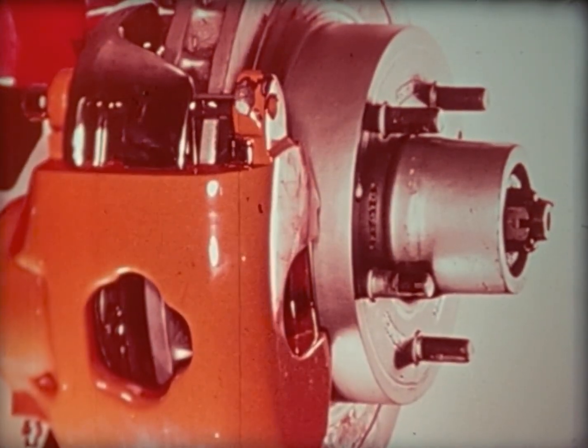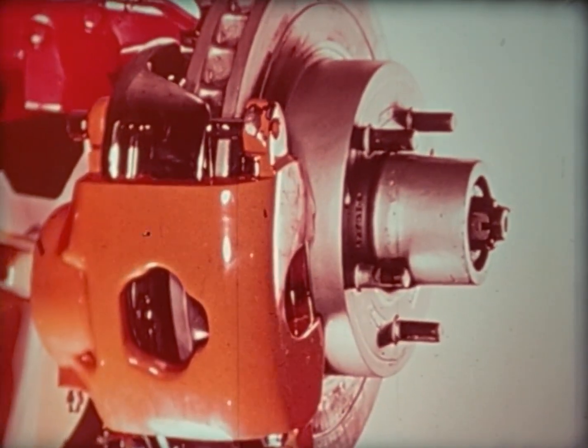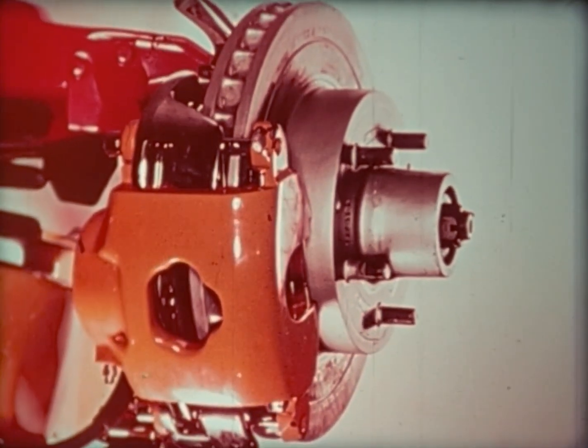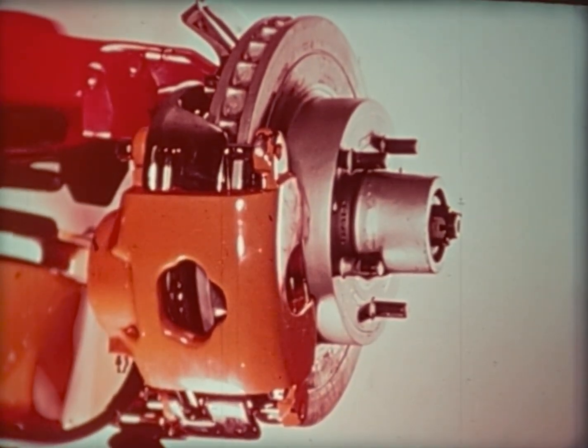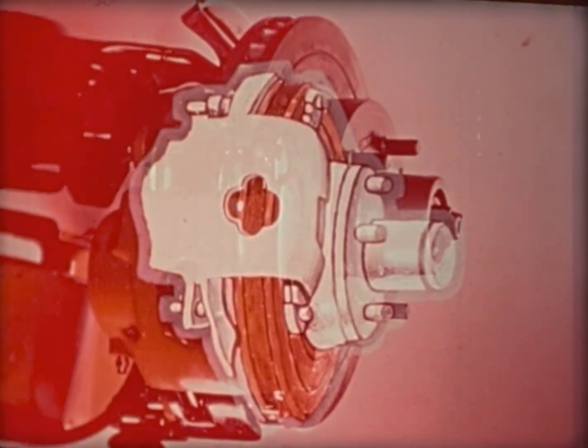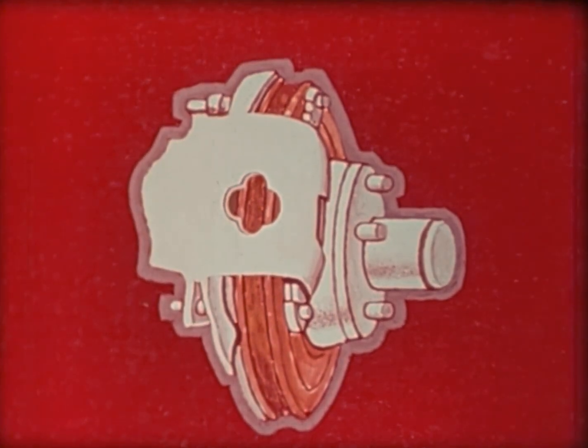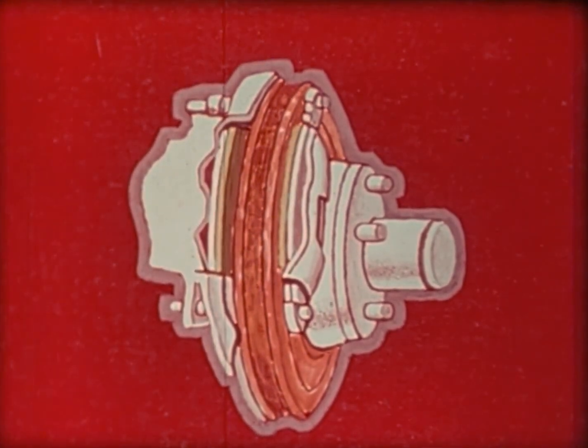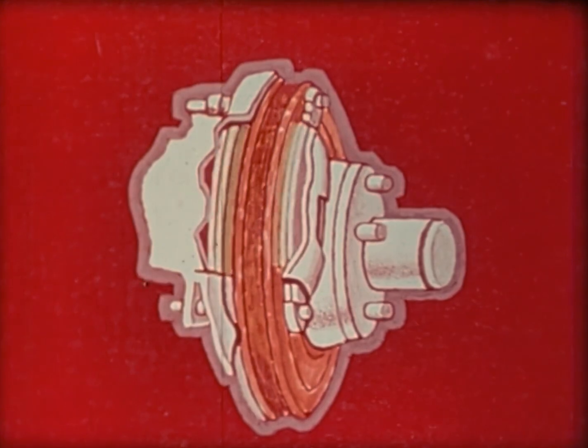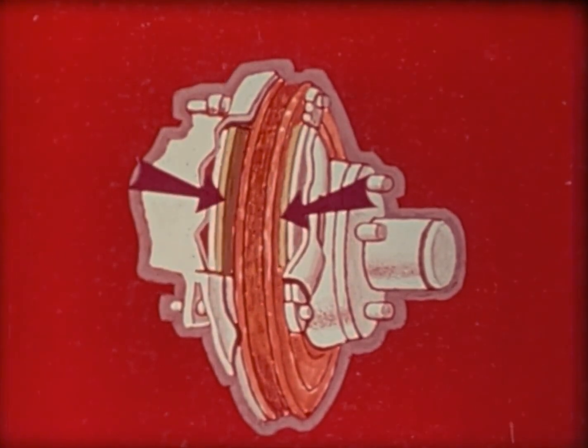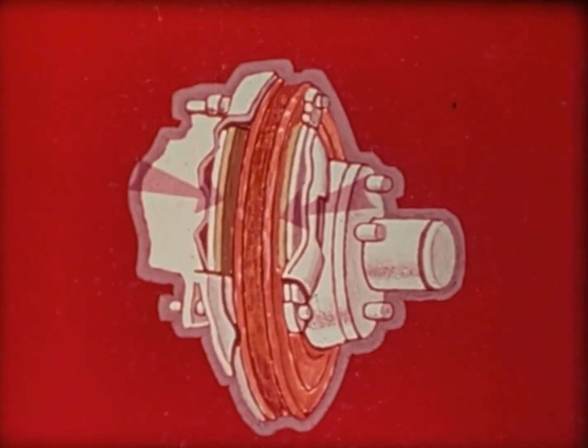Many front brakes are now of the disc type. Like the drums, they are attached to the wheel and axle combination. The linings are held in what looks like a pair of pincers, or calipers, and the operation is squeezing them together. The clearances are actually very small but are shown wider here for clarity.